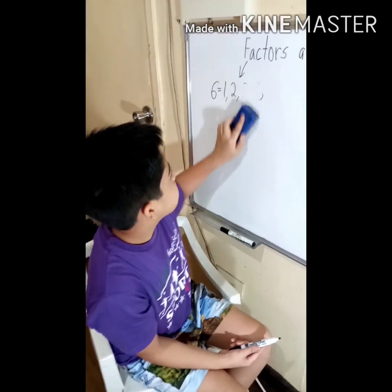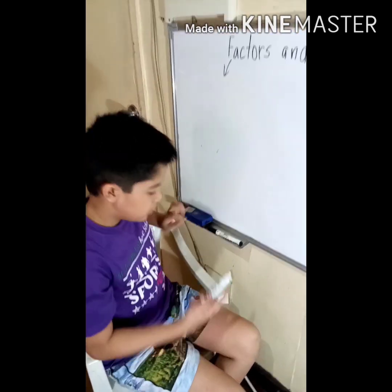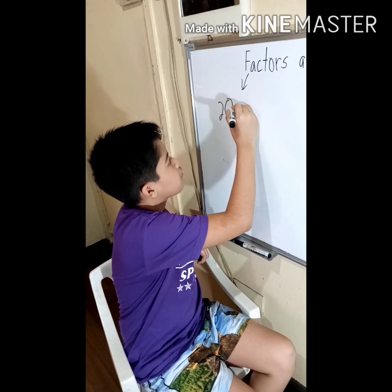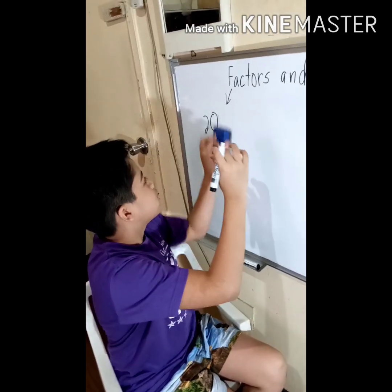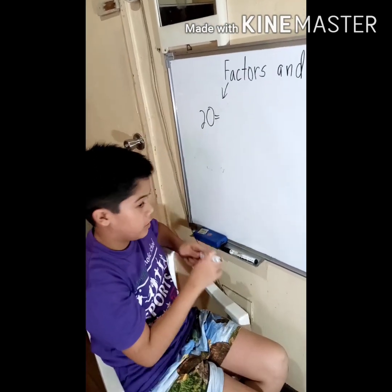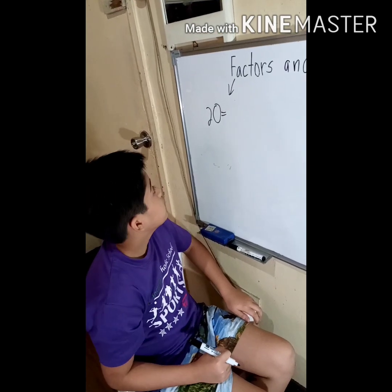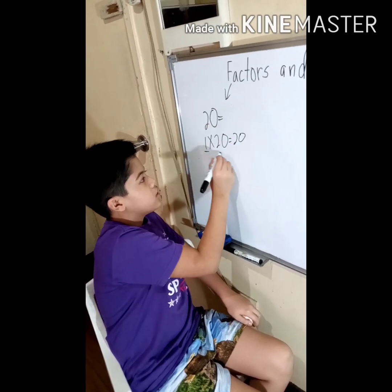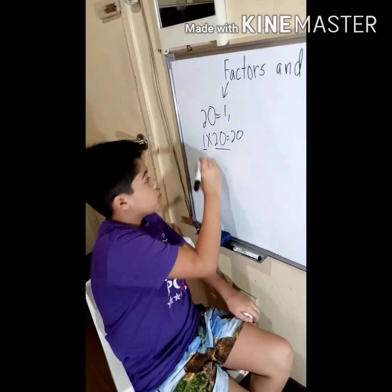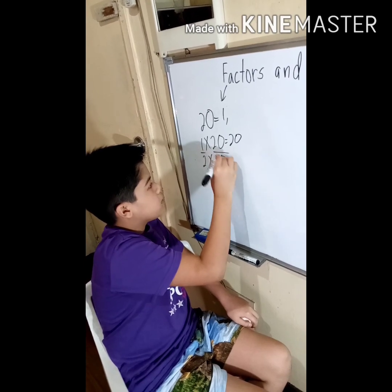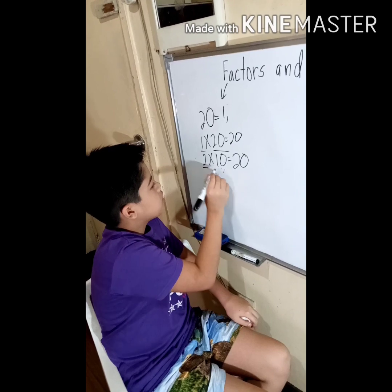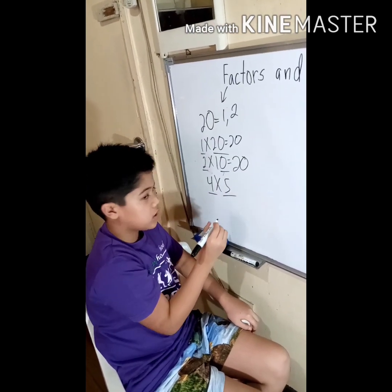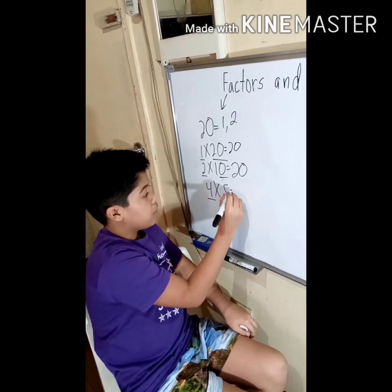Let's move on to another example. For the factors of 20, what numbers should we multiply to get 20? Of course, 1 times 20 equals 20, so both of these are factors of 20. Two times 10 can also be multiplied to get 20. Four times five — so 4 and 5 are also factors of 20, because when these numbers are multiplied together they form the number 20.